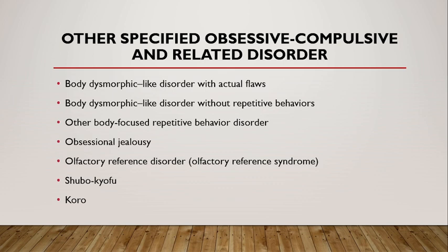Body dysmorphic-like disorder with actual flaw: this is similar to body dysmorphic disorder except that the defect or flaw in physical appearance is clearly observable by others and is more noticeable than slight. In such cases, the preoccupation with the flaw is clearly excessive and causes significant impairment or distress.